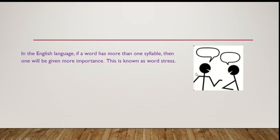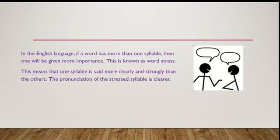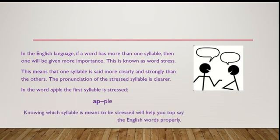Word stress: in the English language, if a word has more than one syllable, then one syllable will be given more importance. This is known as word stress. This means that one syllable is said more clearly and strongly than the others. The pronunciation of the stressed syllable is clearer. In the word 'apple,' the first syllable is stressed — AP-ple. Knowing which syllable is stressed will help you say the English word properly.